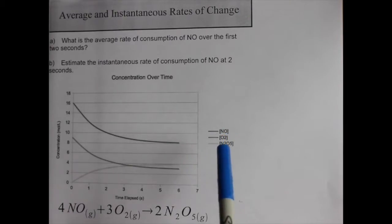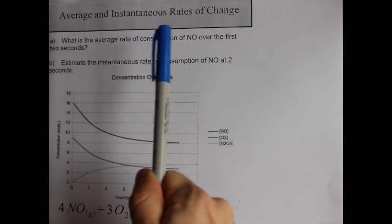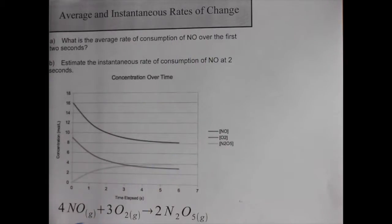The NO is the darkest line here, the N2O5 is the lightest, and O2 is in between. Hopefully that has come out for you. But we're here to talk about average and instantaneous rates of change. You can already tell that the NO is disappearing, the O2 is also disappearing, and the N2O5 is appearing because that's how chemical reactions are supposed to work.